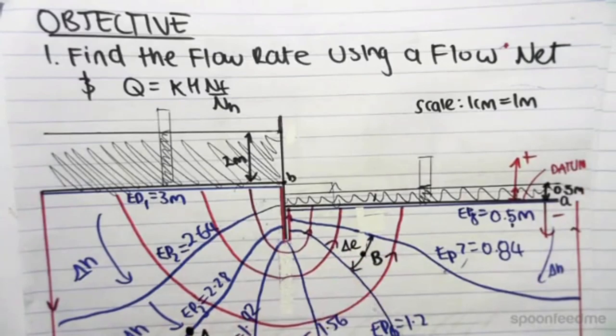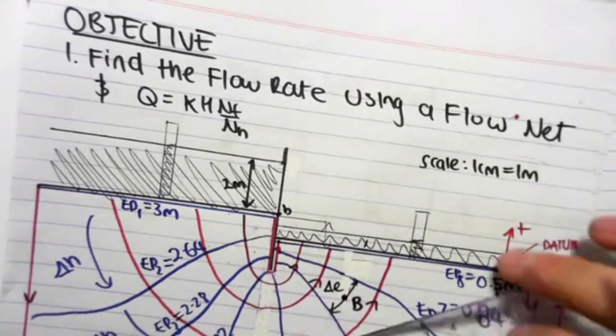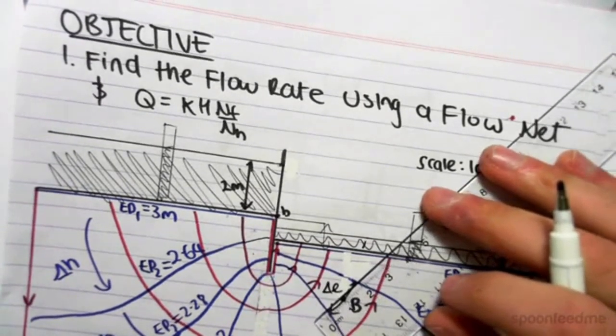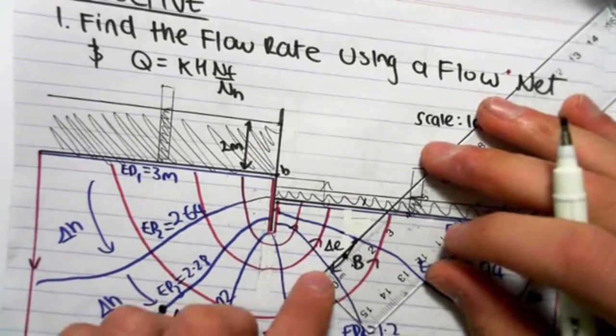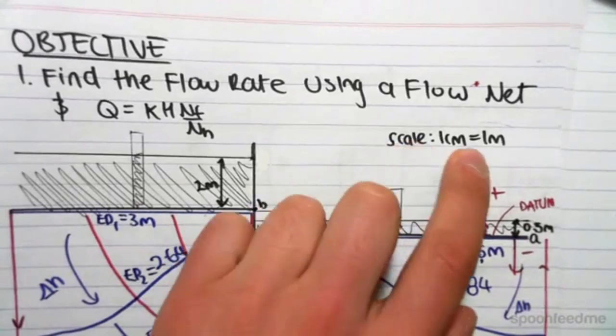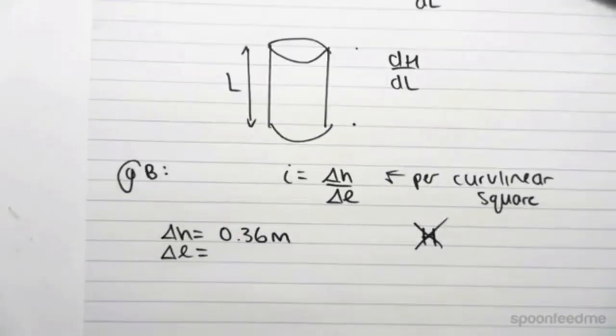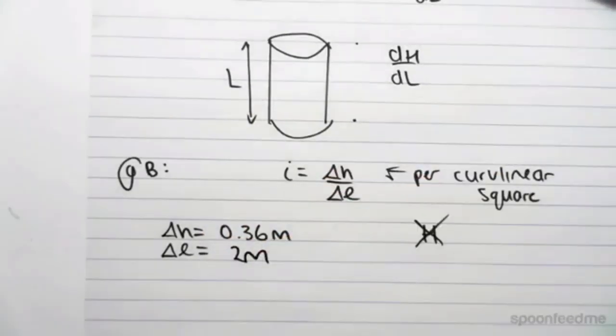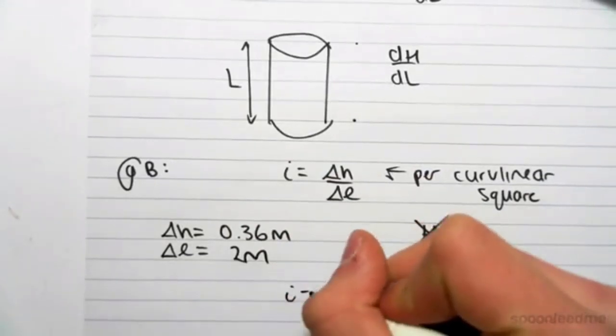We're going to have to be very approximate. We would measure, and we would say we get around 2 centimeters. So from there to there, our change in length is 2 centimeters, which in our scale is 2 meters. So we have change in length equals 2 meters.